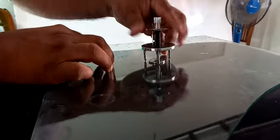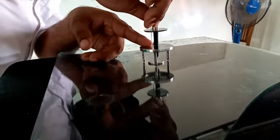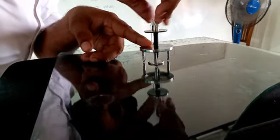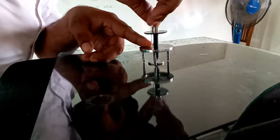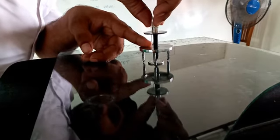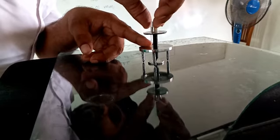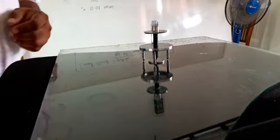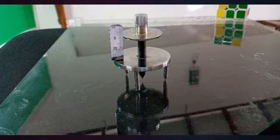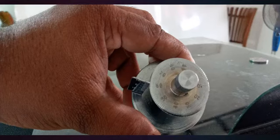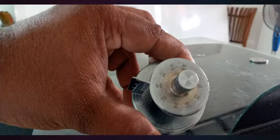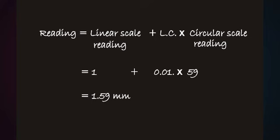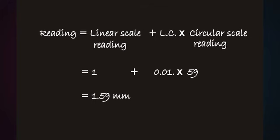Let's see now how the thickness of the coin is measured. Linear scale reads 1 millimeter and 59 circular scale divisions are coincided. According to this equation, the reading is 1.59.